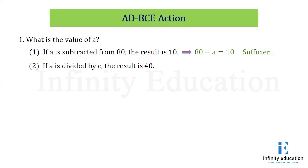We have learnt in our previous video, if statement 1 is sufficient, we will write AD. Now for statement 2, if A is divided by C, the result is 40. Let us write this as the equation A/C = 40. It is insufficient because this is also a linear equation with two variables, A and C, which are unknown. Hence, it is insufficient. So A should be the answer to this question.